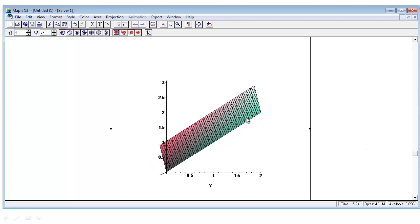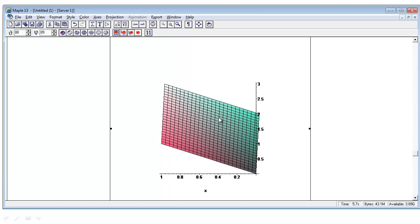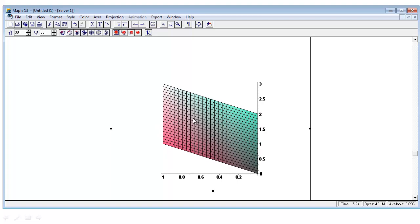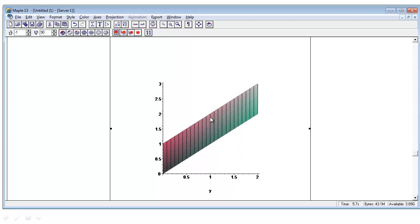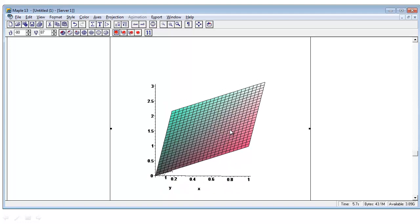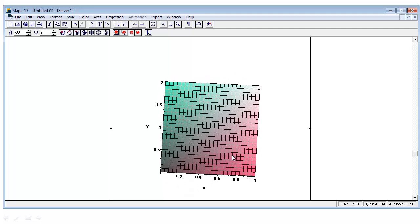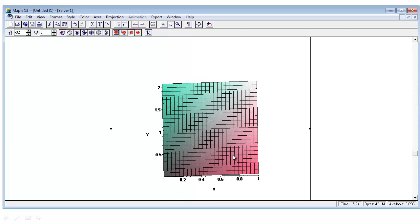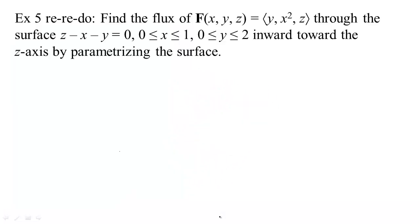Remember this is our surface. One time we did it by projecting down the y-axis and integrated over this parallelogram domain, and one time we projected down the x-axis and integrated over another parallelogram. What we can do now is project down the z-axis, so we could integrate over this square domain. If I write z as a function of x and y, I'll be able to get a really easy parametrization for this vector field.